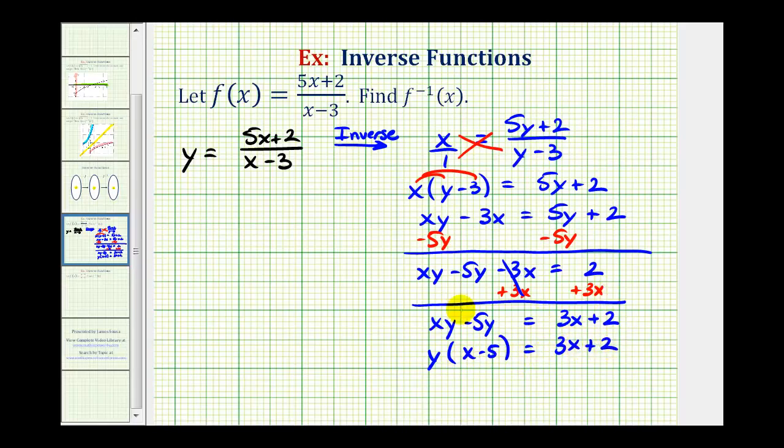Now we're one step away. We need to divide both sides by the quantity x minus five. So we have y equals quantity three x plus two divided by the quantity x minus five.